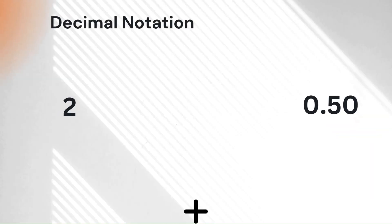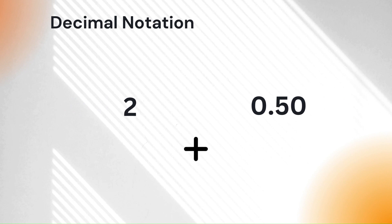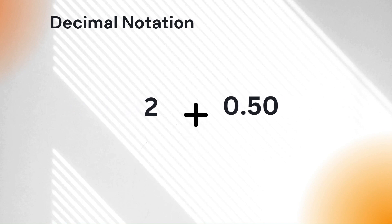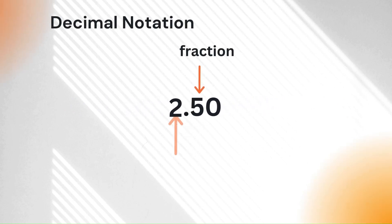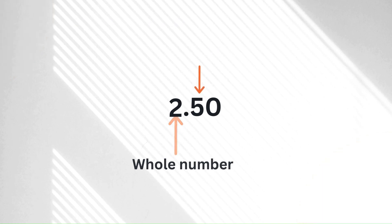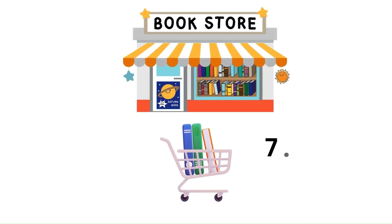Decimal Notation. Decimal notation is a way of writing numbers using a decimal point to separate whole numbers from fractions. Suppose you buy an item for $7.25. Here, 7 is the whole number, and 0.25 is the decimal part, representing $0.25.